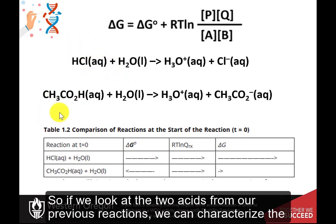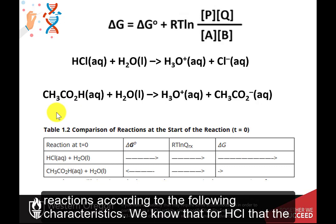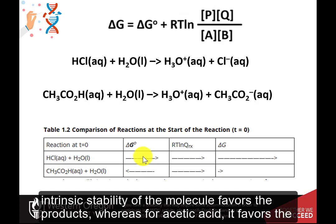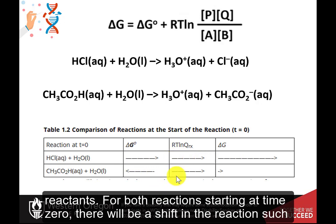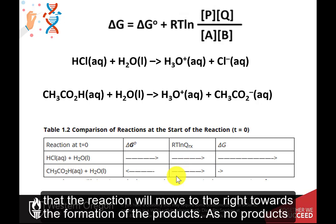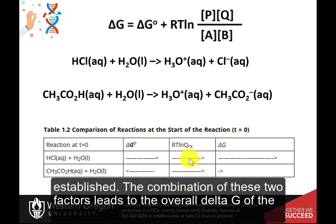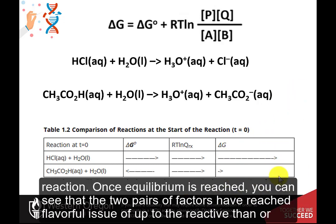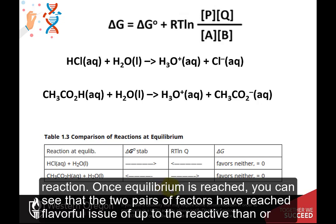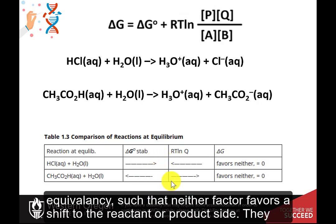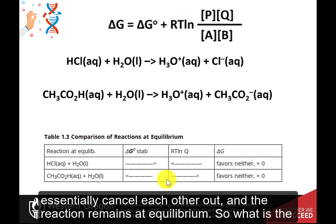Looking at the two acids from our previous reactions, we know that for HCl the intrinsic stability of the molecule favors the products, whereas for acetic acid it favors the reactants. For both reactions starting at time zero, there will be a shift such that the reaction moves to the right towards the formation of product, as no products have been formed yet at T-zero. Products will form until equilibrium is established. Once equilibrium is reached, the two pairs of factors have reached equivalency such that neither factor favors a shift to the reactant or product side — they essentially cancel each other out.